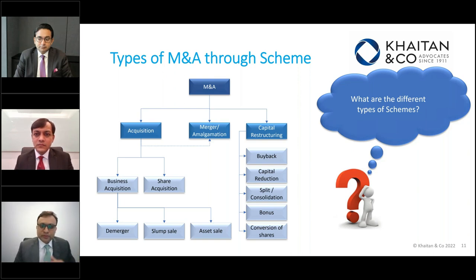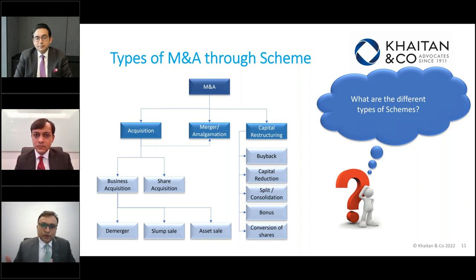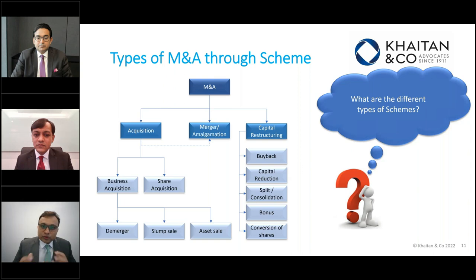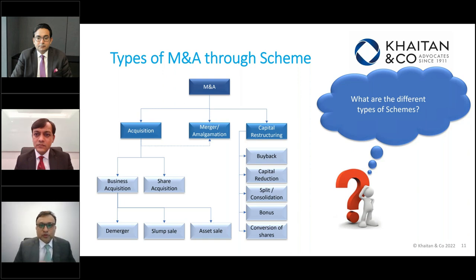A slump sale is not very different from one done under a bilateral agreement versus one done under a scheme, but there are definite benefits to doing it under the scheme, which we will discuss. Regarding capital restructuring — this is one of the most important segments. You can do conversion of capital reserves. After the 2013 Act came into implementation, the concept of general reserves was changed: general reserves can be transferred to retained earnings or profit and loss account, enabling companies to utilize those funds for distribution to shareholders. This cannot be done other than through a scheme.